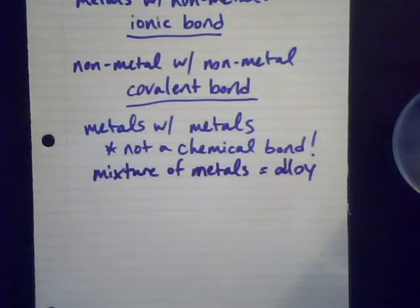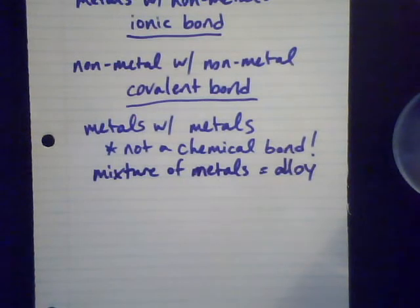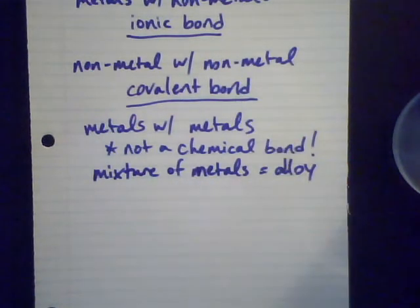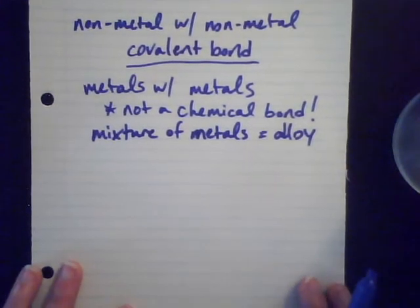You've probably heard of alloys of metals — things like brass, bronze, steel, or white gold, for instance. Anytime you have a mixture of metals, these are usually homogeneous mixtures, meaning you can't tell the difference by the naked eye between one part and the other. We kind of think about them with other chemical bonds, even though they're not technically chemically bonded together in a traditional ionic or covalent sense. We still have a model to discuss how these metals stick together, and it does involve the electrons, which is sort of why they're in this chapter.